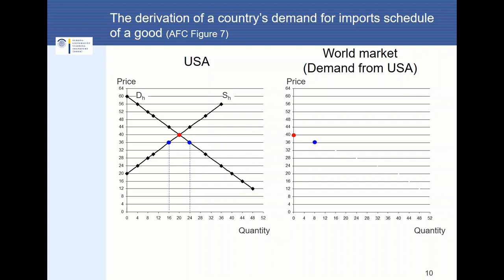What happens if the price decreases to 36? When the price is equal to 36, the quantity demanded increases to 24, and the quantity supplied within the U.S. decreases to 16. This implies that demand is larger than supply, and the quantity imported will be equal to 8 units — so at the price of 36, the demand from the U.S. in the world markets will be equal to 8. What happens if the price decreases further to 30? The quantity demanded is equal to 30 and the quantity supplied is equal to 10, so the difference of 20 will be imported — at the price of 30, the quantity of 20 will be demanded in the international markets.